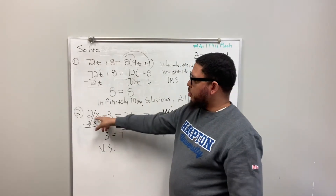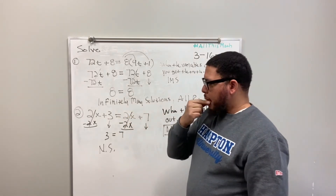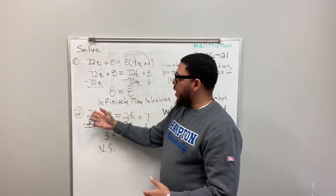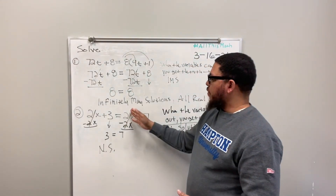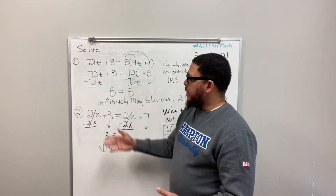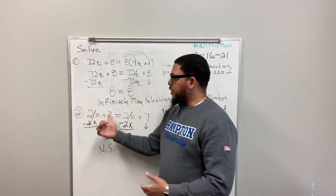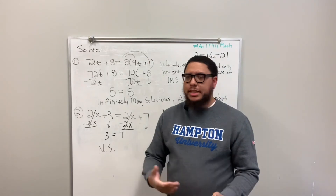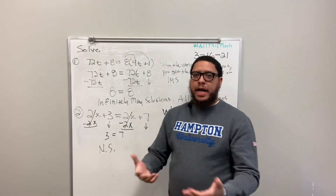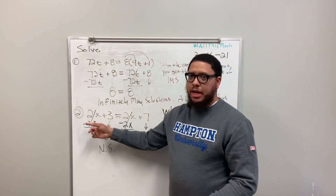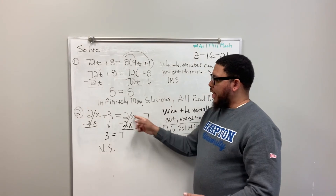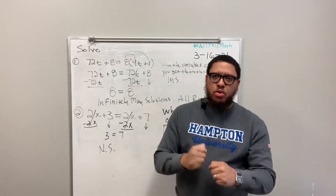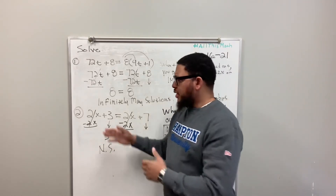Look at the original equation: 2x plus 3 equals 2x plus 7. We don't know what x is and we don't have to. But 2x on the left side is the same as 2x on the right side. That's saying something plus 3 is equal to that same thing plus 7. That's like saying if 2x was $50 and I add $3 to my $50, how can that equal the same amount as if I added $7 to my $50? Just look at it and see if it makes sense first.